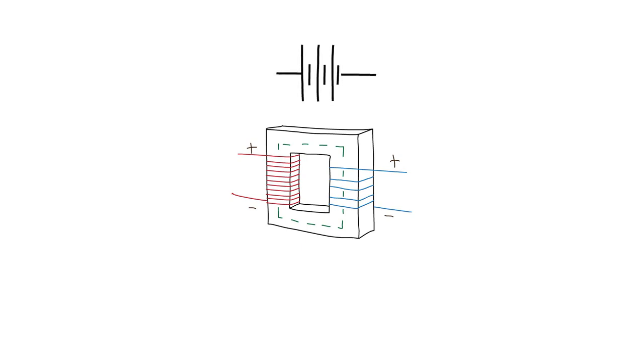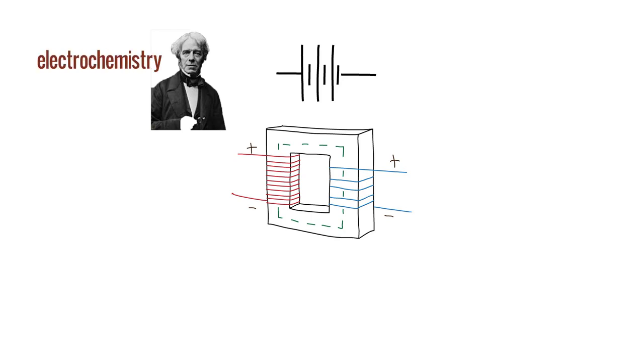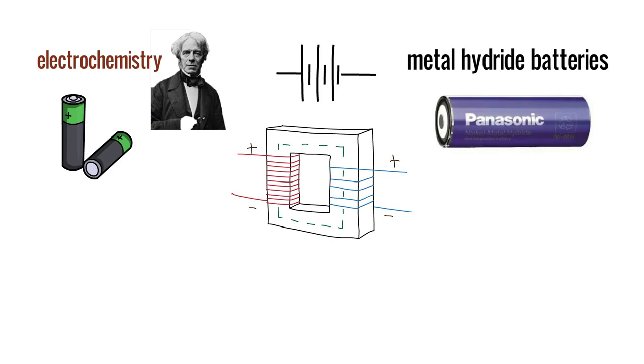Faraday discovered that a varying magnetic field causes electricity to flow in an electric circuit. Faraday was one of the major players in the founding of the new science of electrochemistry. Electrochemistry is the science that has produced the lithium-ion batteries and metal hydride batteries, which are capable of powering modern mobile technology.